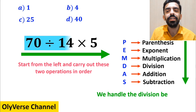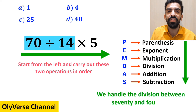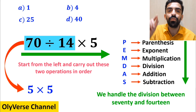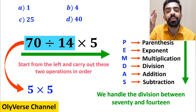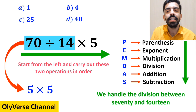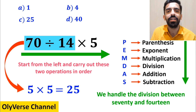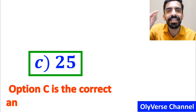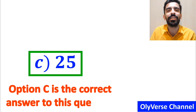First we handle the division between 70 and 14, which simplifies the expression to 5 multiplied by 5. Finally, the answer becomes 25. Therefore, option C is the correct answer to this question.